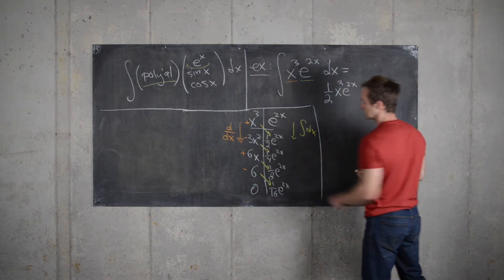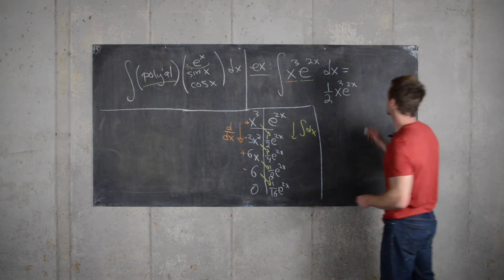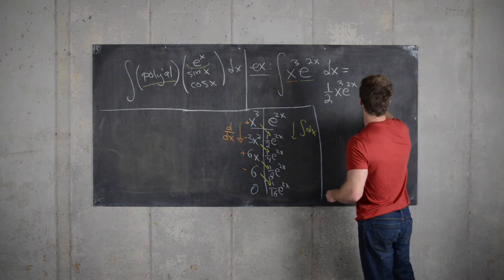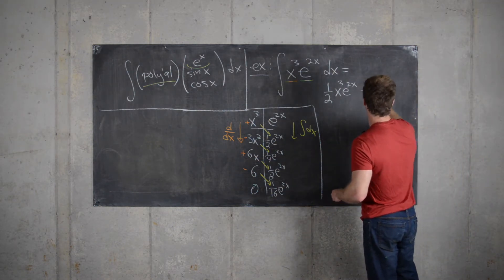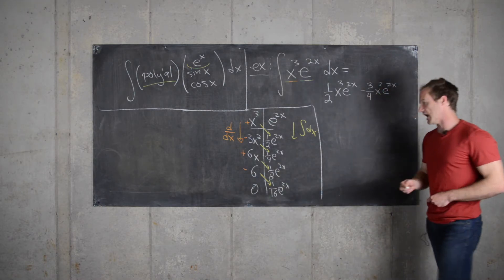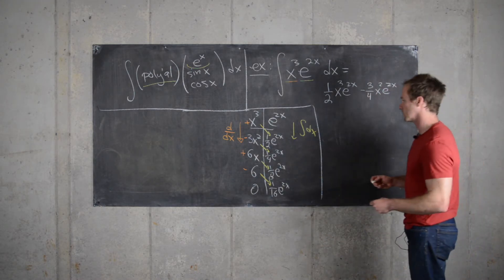We have minus 3x squared times 1 quarter e to the 2x. So I'll write that as minus 3 quarters x squared e to the 2x and then so on and so forth. I'll go quickly now.